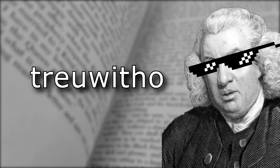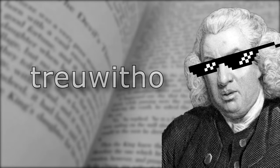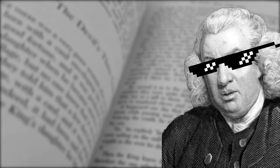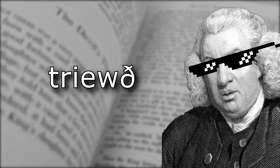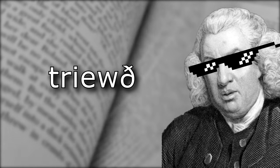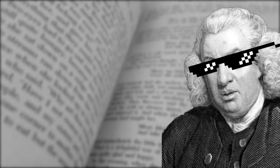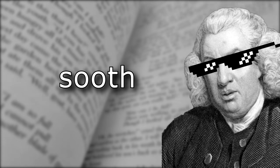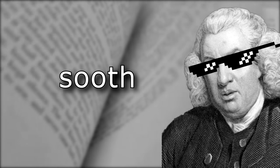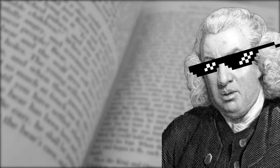In Germanic, the word became something like triuso, which indicated something having or being characterized by good faith. When Germanic morphed into Old English, the word was trioth, which meant faith, faithfulness, and loyalty. Around this time, there is some evidence that truth was already being used in its modern sense, but that was infrequent. The most dominant word with the same meaning as the modern word truth was the word sooth. Around the 14th century, sooth became associated with soothsayers or fortune tellers and fell out of use as a word to describe something that was real.